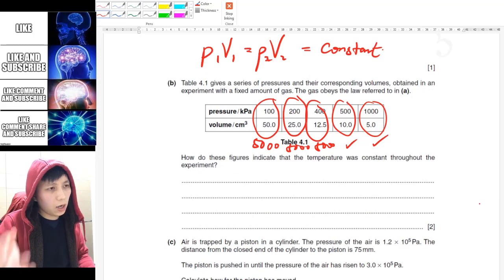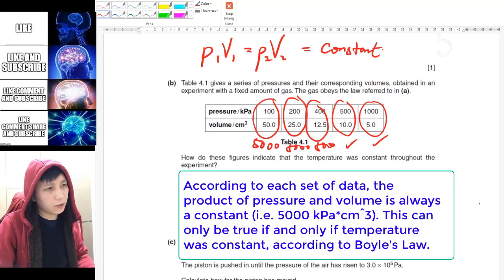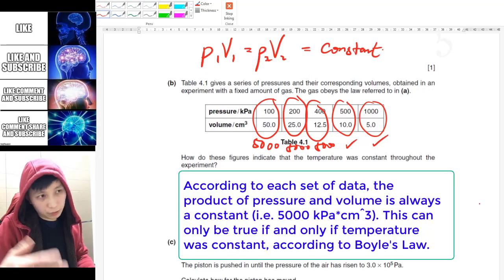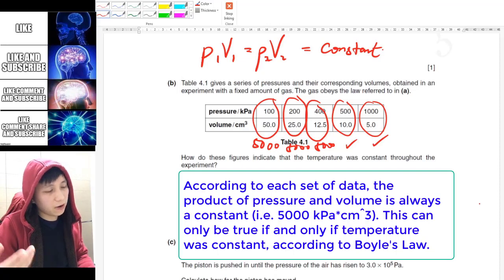So what you can say about it is, according to each set of data, the product—that means when you multiply them—the product of pressure and volume is always a constant (5000), and this can only be achieved...